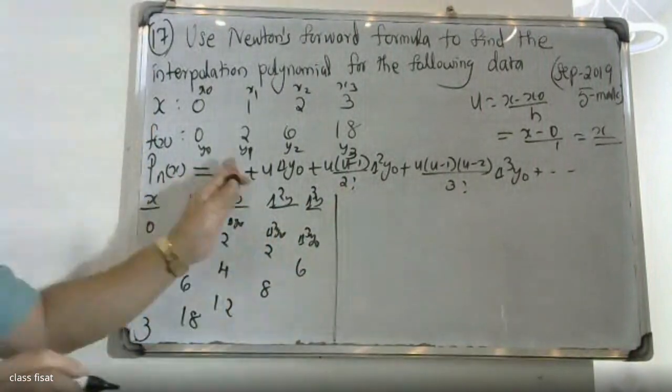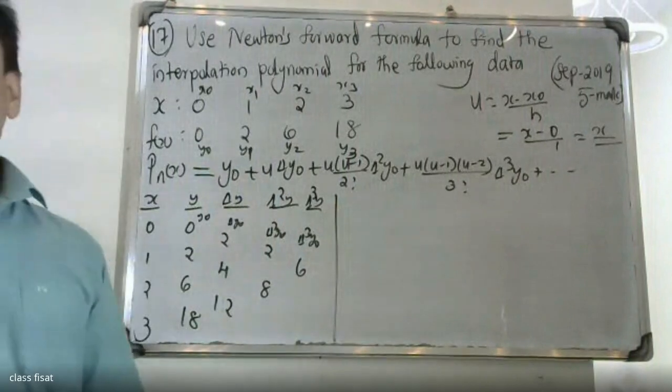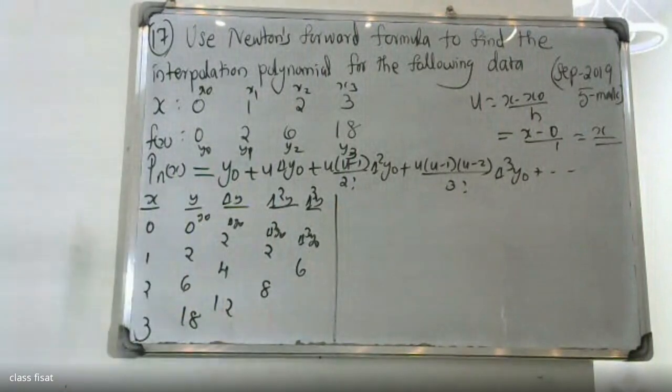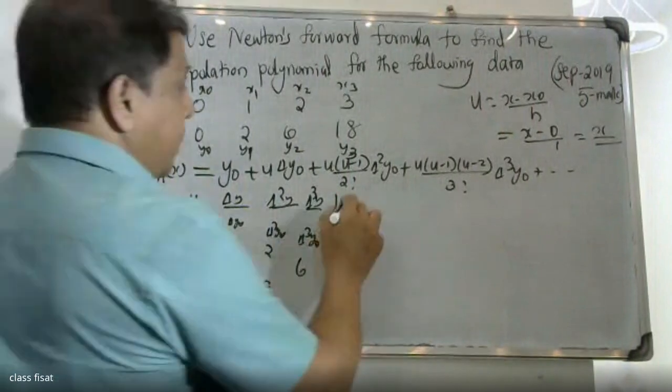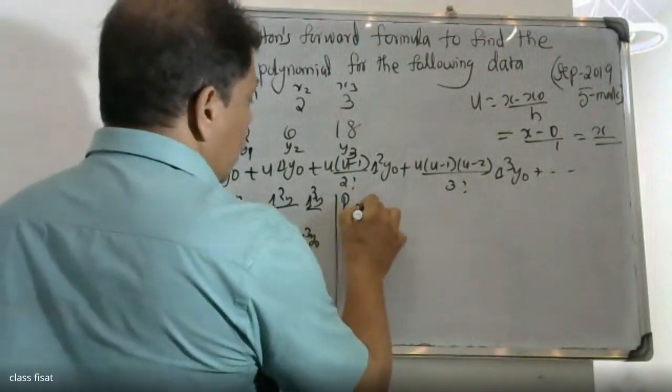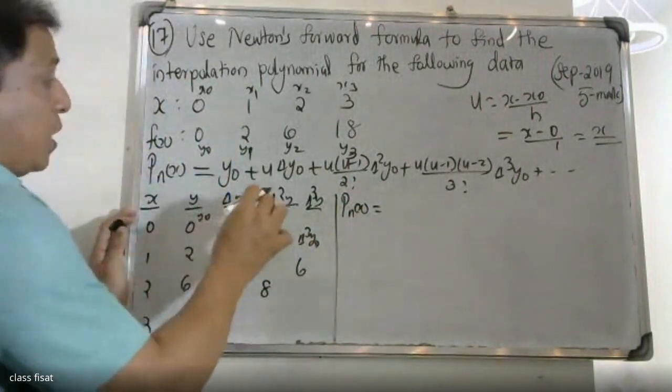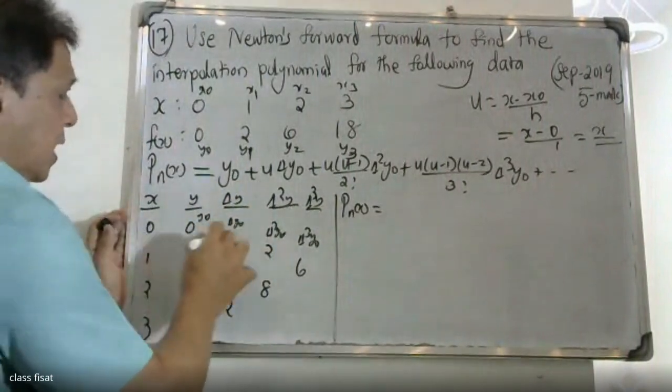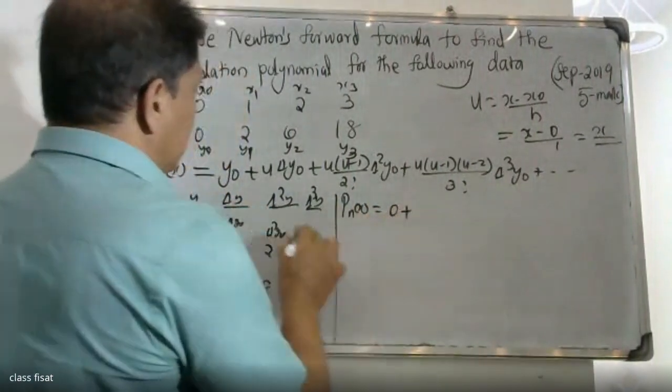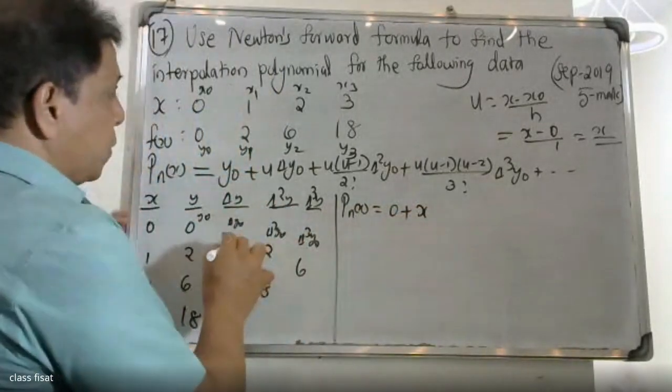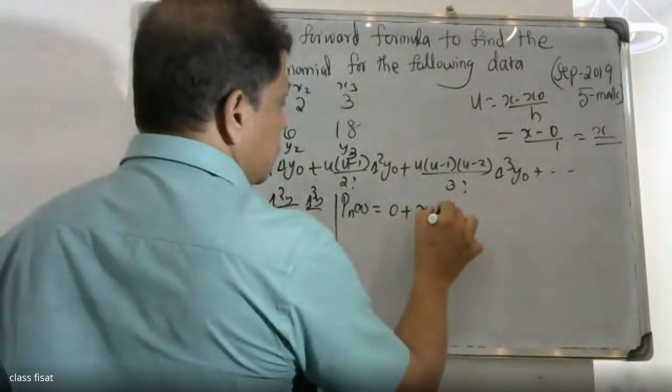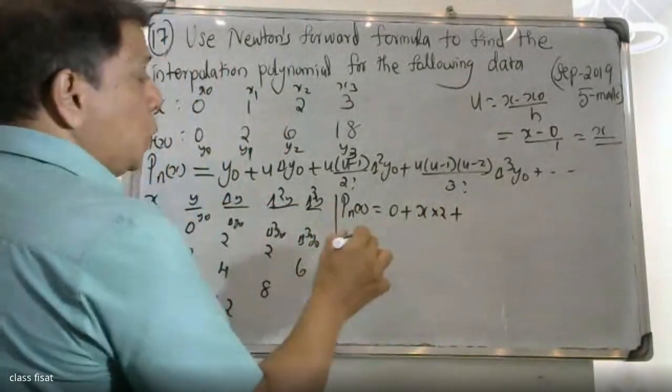This is the formula for all the values, this is the formula for the value substitute. Y-note, zero plus, U in the value of dual plus, plus U into U minus 1.